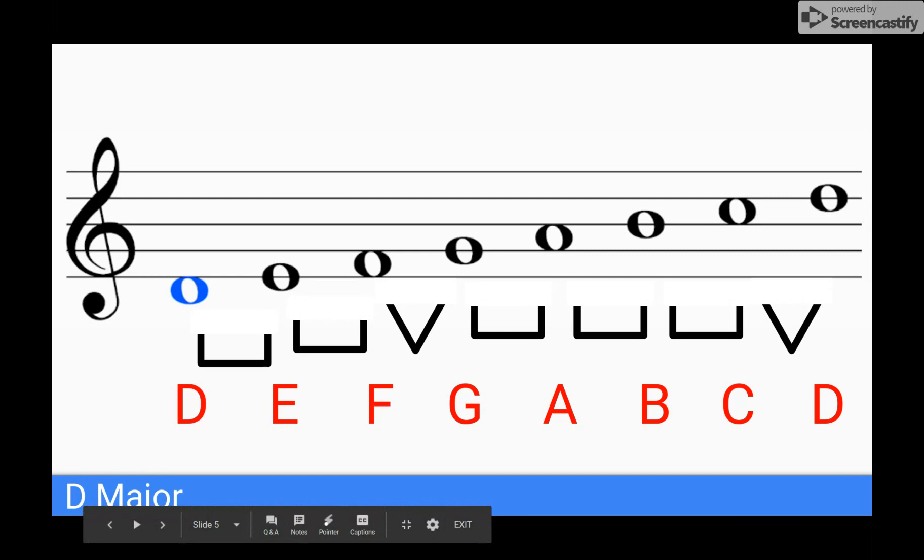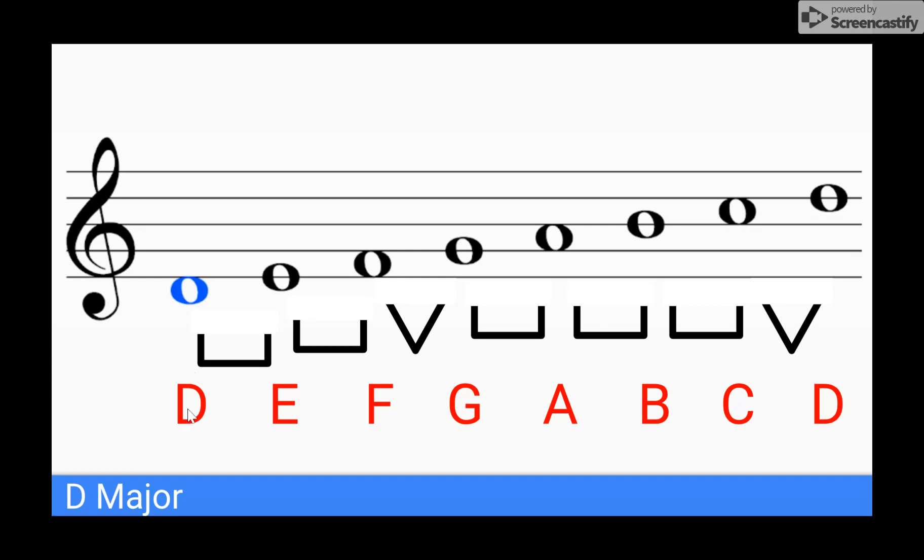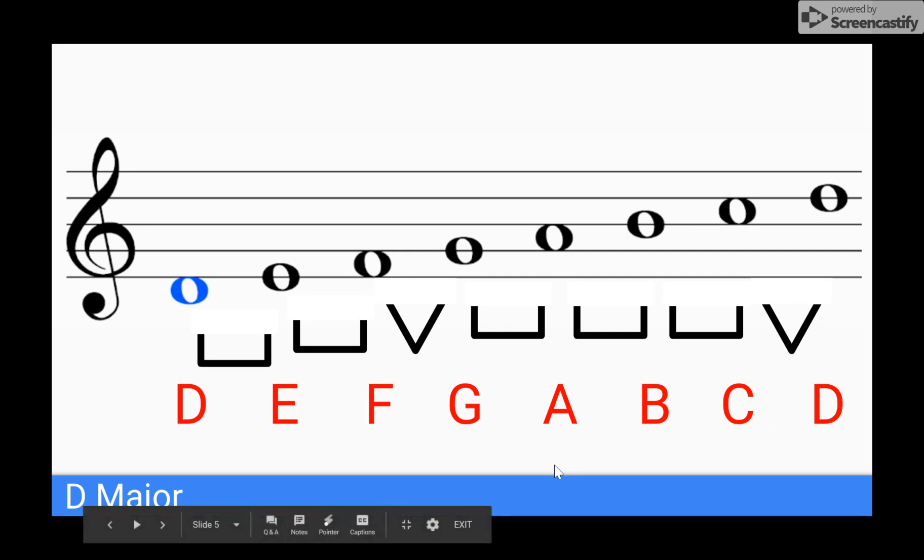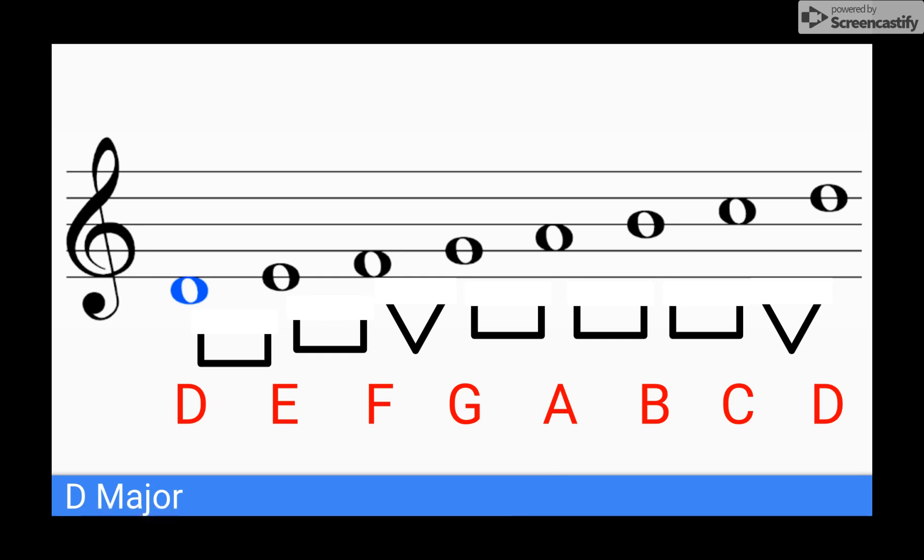And also, remember our keynote is our Do. Our keynote, what the scale is built on, D and D, represents our Do. So we know we're in the key of D, that we have a D major scale because we start and end on D, and D is Do.